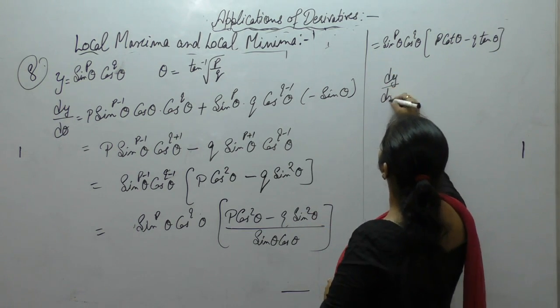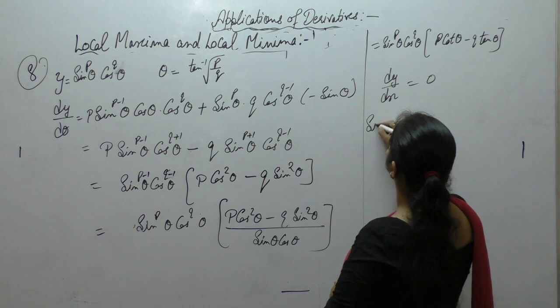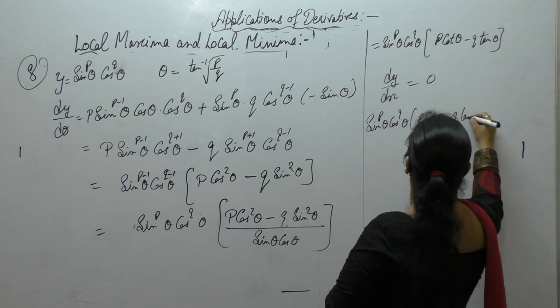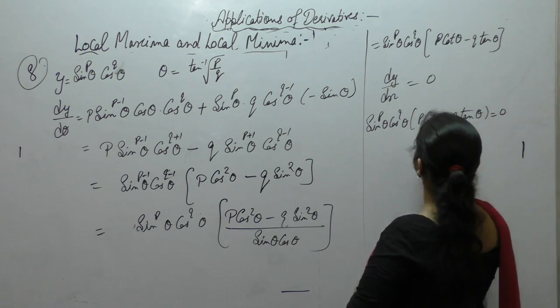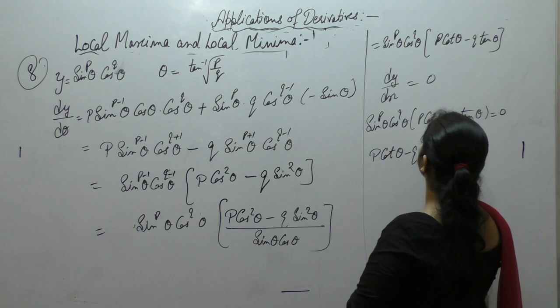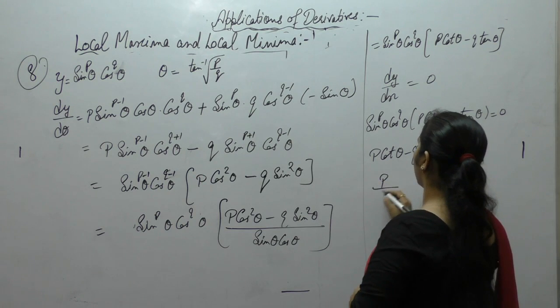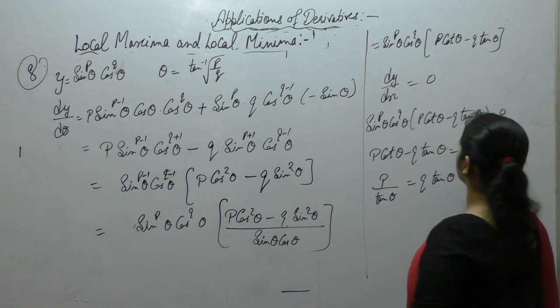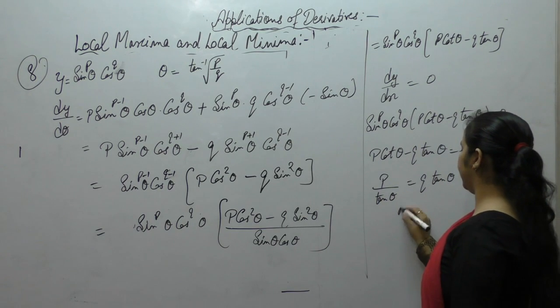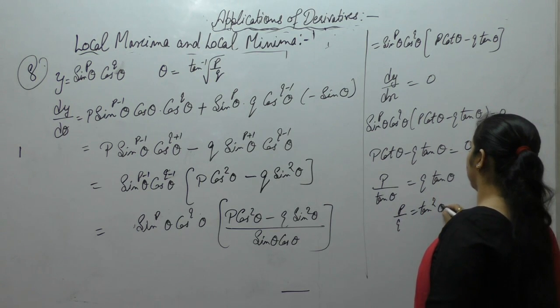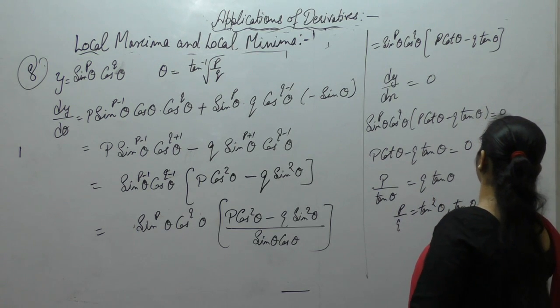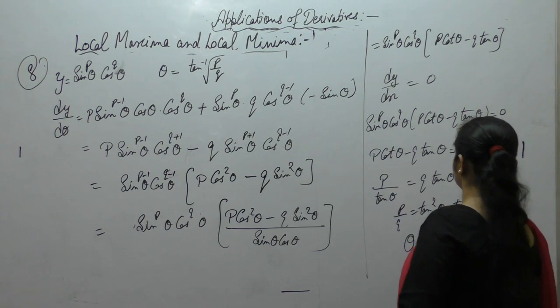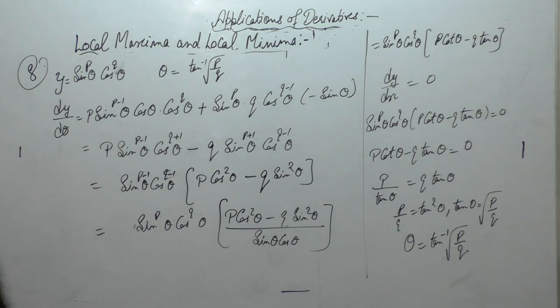Now put first derivative equals to 0. Then sine p theta cos q theta, p cot minus q tan is equal to 0. So p cot theta minus q tan theta equals 0. cot is 1 upon tan. So what we get? p upon q is tan square. Or we get tan theta is square root of p upon q. theta is tan inverse square root of p upon q.